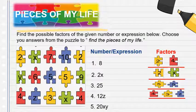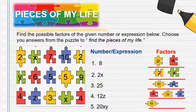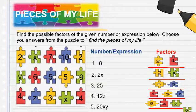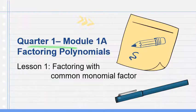Number 5: 20xy — the factors are 5, 4, x, and y. This is Order 1, Module 1A: Factoring Polynomials.